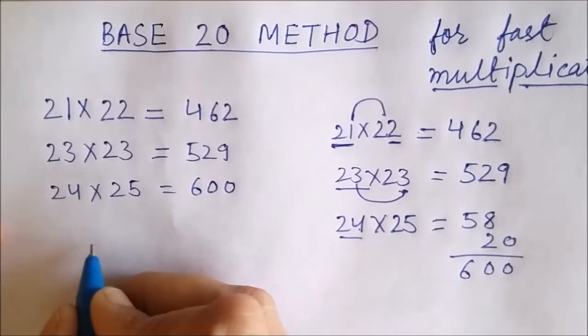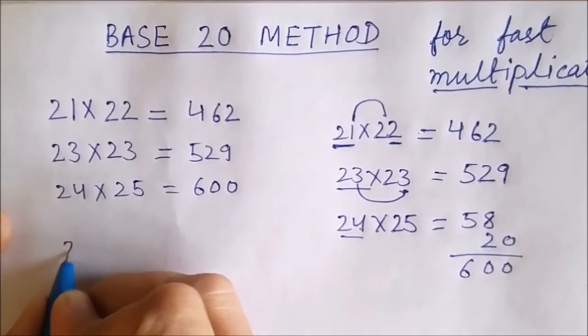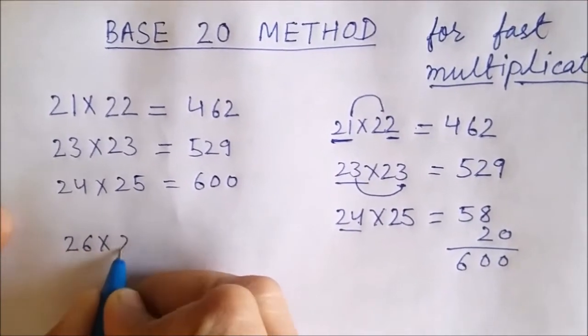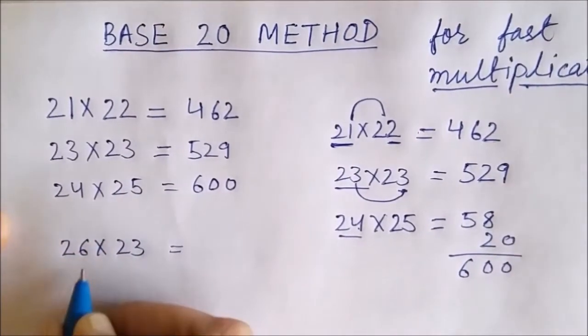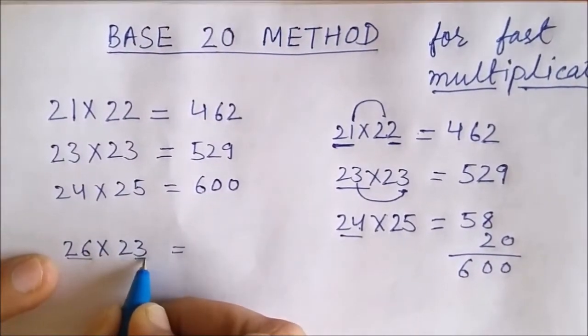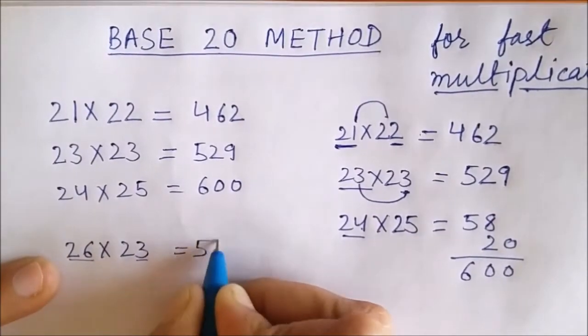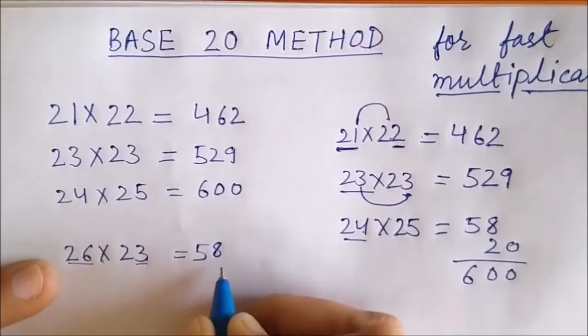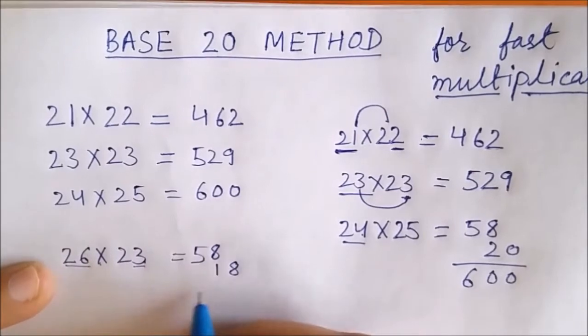You can also do multiplication so fast. Let us take few more examples. 26 multiplied by 23. Yes, using the trick. 26 plus 3 is 29. Double of 29 is 58. 6 multiplied by 3 is 18. So, our answer is 598.